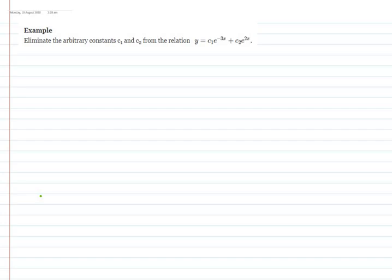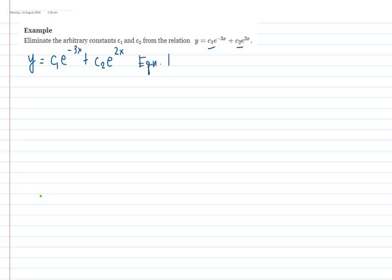Example number 1 for elimination of arbitrary constants. We have y = c₁e^(−3x) + c₂e^(2x). We have two arbitrary constants, c₁ and c₂. So therefore, we need to differentiate up to the second derivative, because by rule, if you have two arbitrary constants, the differential equation you are looking for is second order. This is our equation 1.